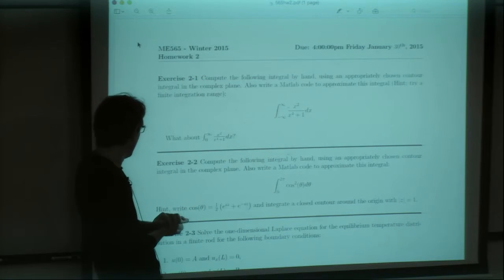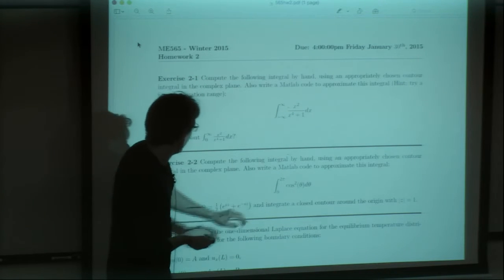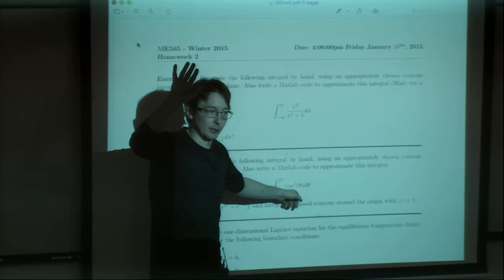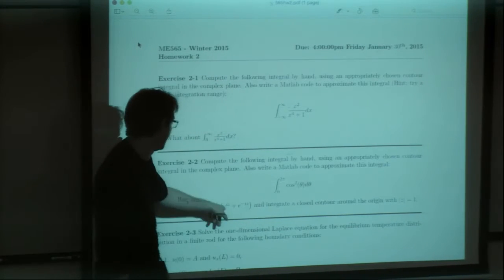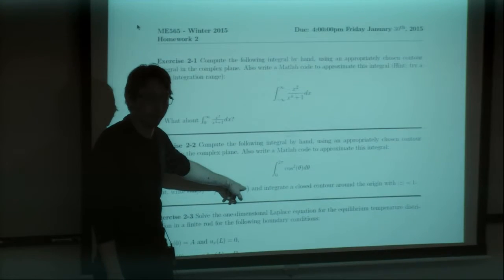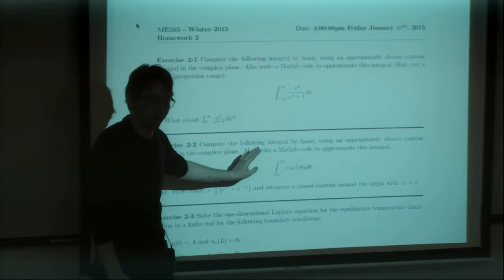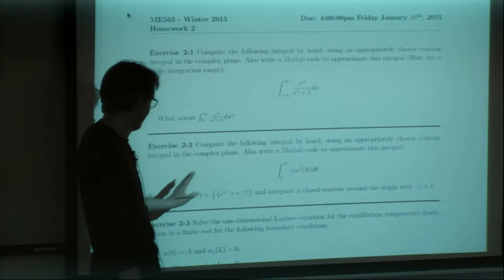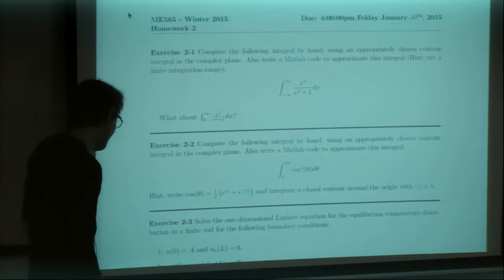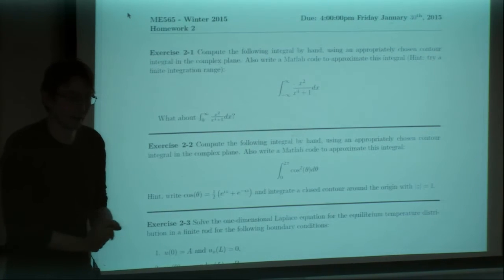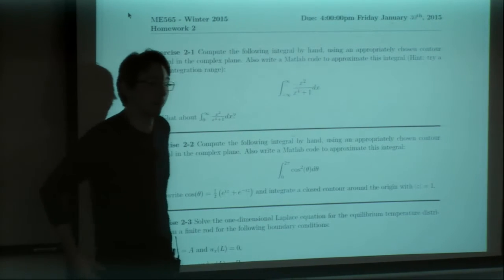Also, did everyone get the email about the typo in the second problem? It should be e to the i-theta plus e to the minus i-theta, not z. That should make it way, way easier. I think that's all the clarifications — were there any questions about this homework?